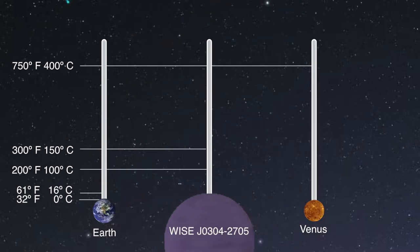The current temperature of the object is 200 to 300 degrees Fahrenheit, or 100 to 150 degrees Celsius, which is intermediate between that of the Earth and of Venus.